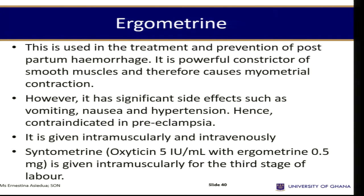Ergometrine is used in the treatment and prevention of postpartum hemorrhage. It has significant side effects such as vomiting, nausea, and hypertension, which means ergometrine should only be used when it is confirmed that the woman does not have elevated blood pressure. In preeclampsia or hypertensive conditions in pregnancy, you do not administer ergometrine; if you want to aid contraction, you use oxytocin instead. Ergometrine can also come in a combination preparation called Syntometrine, which combines Syntocinon and ergometrine — one counteracts the side effects of the other.